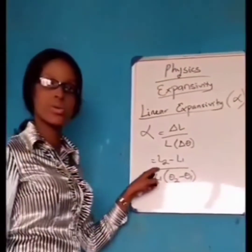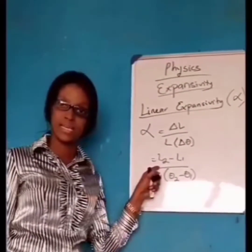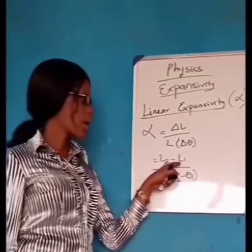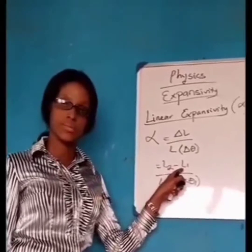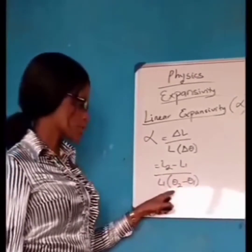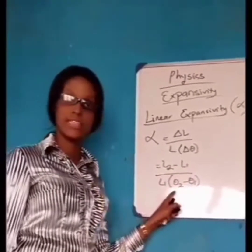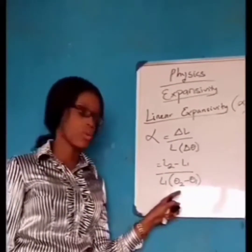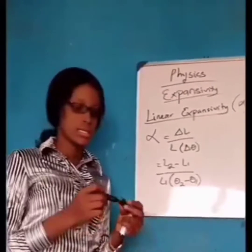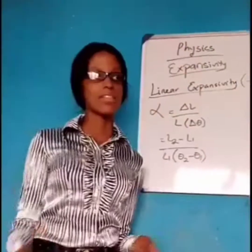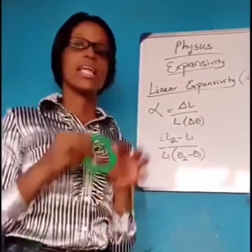Here, L2 is the final length, while L1 is the initial length. Theta 2 is the final temperature, while theta 1 is the initial temperature.